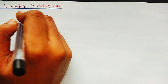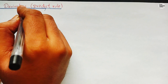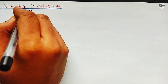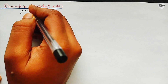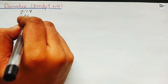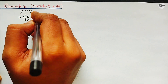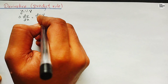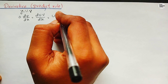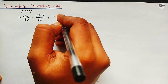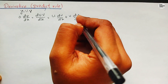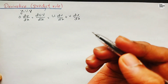Discussing about the product rule: suppose we are given an expression which is in the form of u times v — suppose y equals to u times v. If we find the derivative of y, dy/dx equals to d(uv)/dx, then according to the product rule it will be u times dv/dx plus v times du/dx.